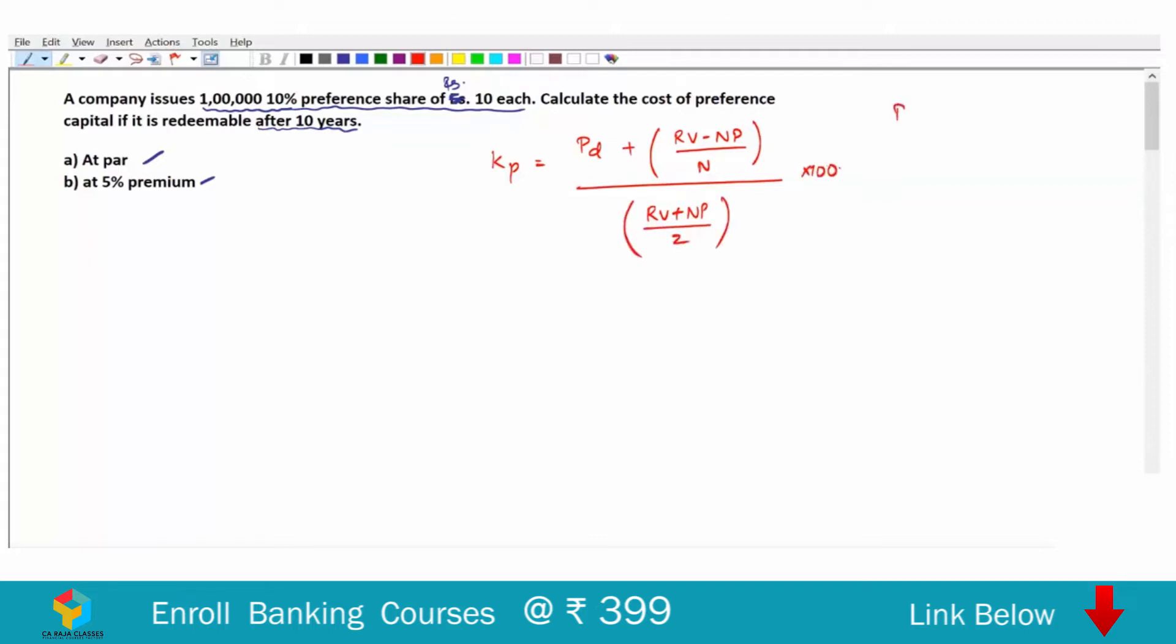Here when we say Pd, it is preference dividend. So what is the preference capital here? 1,00,000, this is the number of shares into 10. So 10,00,000 is the preference capital. That multiplied by preference dividend rate of 10%. So preference dividend is equal to 1,00,000. Pd is equal to 1,00,000.